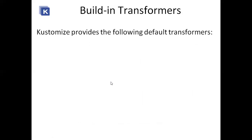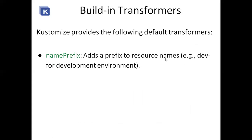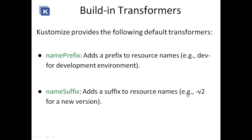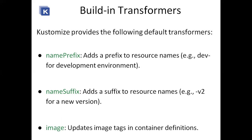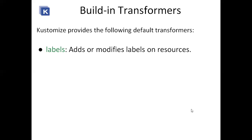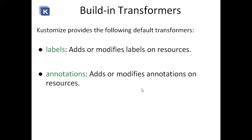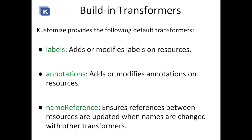Now, built-in transformers. There are some default transformers. Name prefix adds a prefix to resource names. For example, if you want to move to an updated version, you use a hyphen v2 as a name suffix. Image updates update container definitions — these are Docker images. Kustomize also provides labels to add or modify labels on resources, and annotations to add or modify annotations on resources. Name references ensure references between resources are updated when names are changed with other transformers.